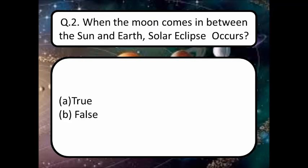Next question: when the moon comes in between the Sun and Earth, a solar eclipse occurs — is it true or false? Think about your answer. You can write your correct answer in the comment box. The correct answer is True — the above statement is absolutely true.